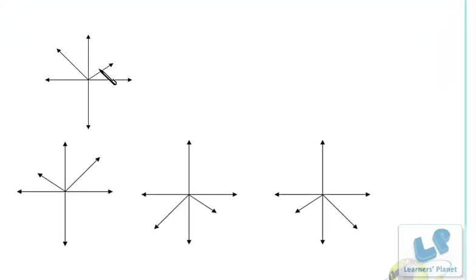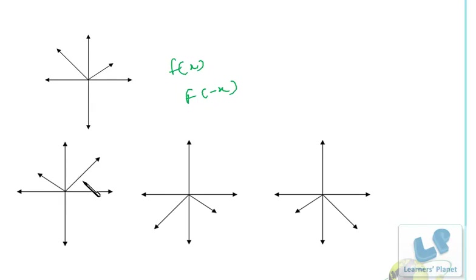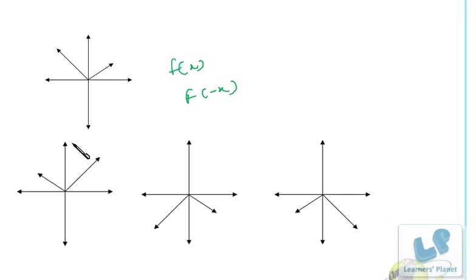Now watch carefully — this is the graph of f(x). Converting this to f(-x): you can see the shape is getting inverted along the y-axis. This shape is converted to this shape — the small arrow comes this side, the bigger arrow comes this side. That is an inversion along the y-axis. So this is f(x) and this is f(-x). Then converting f(x) to -f(x) is an inversion along the x-axis.